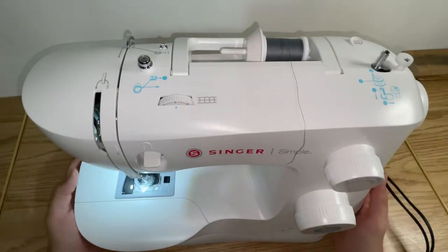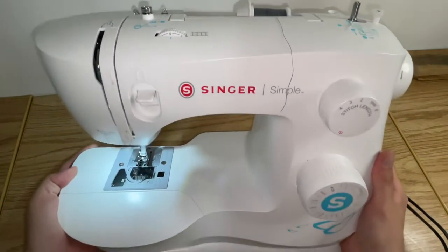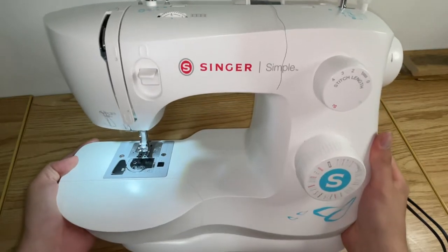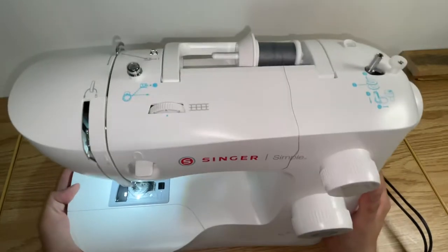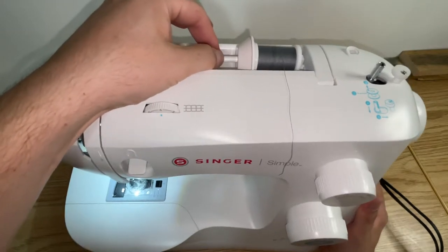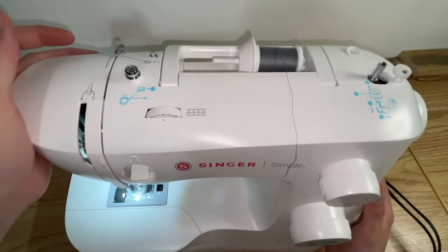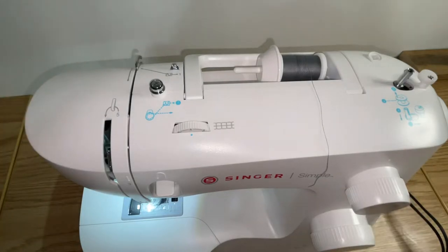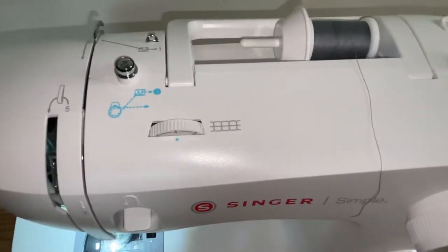Hey there folks, in today's video I'm going to show you how to thread the bobbin on the Singer Simple 3337 sewing machine. So first thing you want to do is load up your thread post with some thread. We've already done that so we're just going to go ahead and zoom you in for the first step.